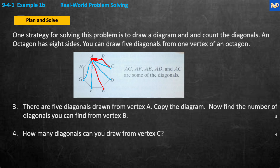There are five diagonals drawn from vertex A. Copy the diagram now and find the number of diagonals you can find from vertex B. How many diagonals can you draw from vertex C? Well, let's go look at B. From B, we already have one from A, you can't count the A B line. We can go from B to H, and then we can go to B to G, and then B to F, and B to E, and B to D. You can't go B to C. So there are five diagonals drawn from vertex A. How many did we get from B? Well, we had one, two, three, four, five.